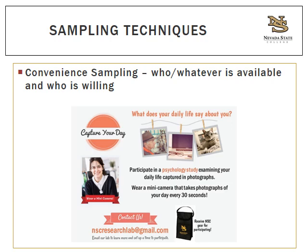Take a look at this flyer and think about the challenges with convenience sampling. This is from a study at Nevada State College where the researcher wanted people to wear a miniature camera around their neck that took pictures every 30 seconds. Participants would come into the lab, download their pictures, and answer various questions. The research team wanted to see how those questions were predicted by the pictures taken by the camera.